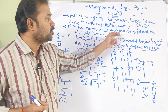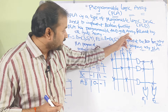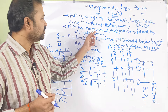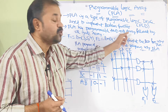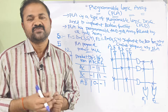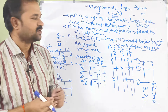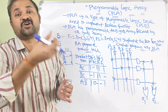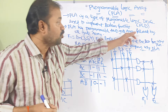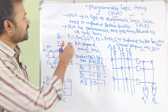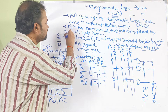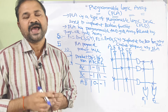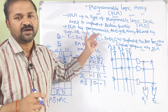With the help of PLA or PAL we can implement any boolean function. PLA has a Programmable AND gate Array followed by an OR gate Array. So the AND gate Array means we will have a collection of AND gates that are programmable. Followed by a Programmable OR gate Array — meaning we will have a collection of OR gates and we can do some programming on those as well.